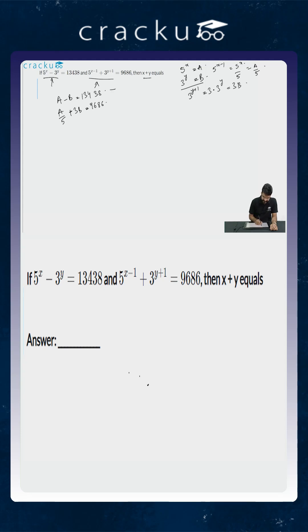So we have to just solve these two equations. These are linear equations in two variables, calculate the value of a and b. We can do that simply by multiplying the second equation with 5. So 2 into 5 will become a plus 15b is equal to 9686 into 5. You can use your calculator to calculate it, this will equal 48430.